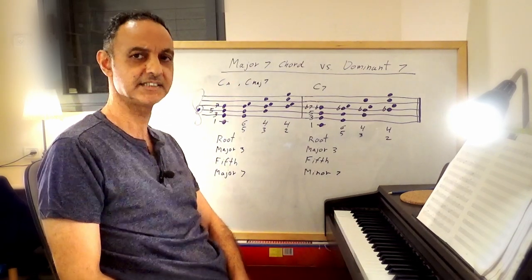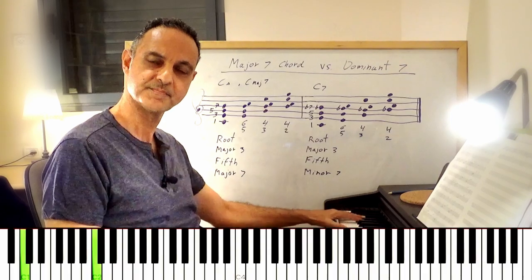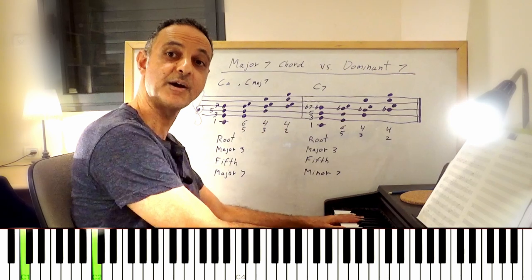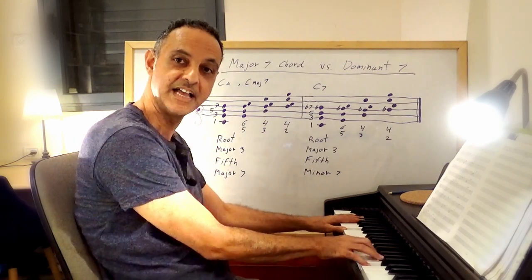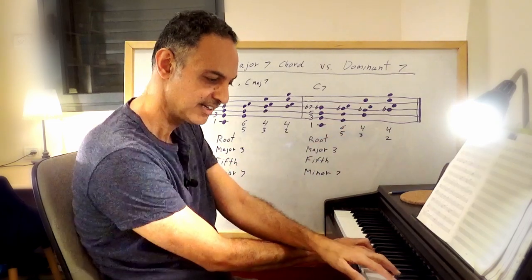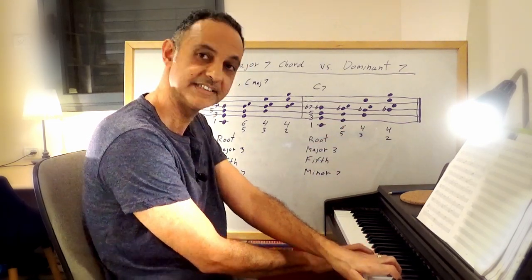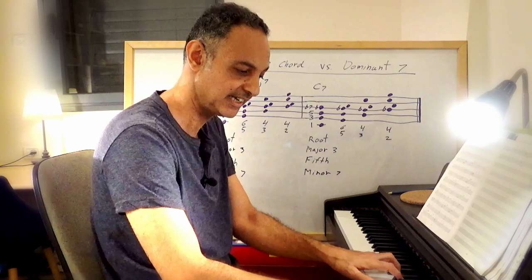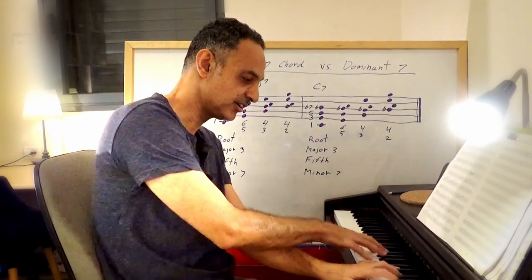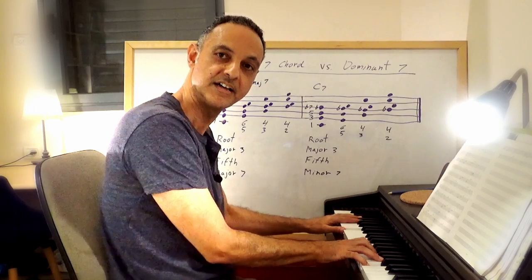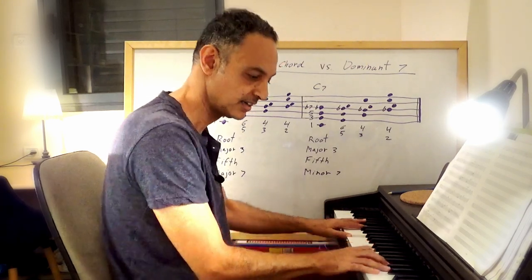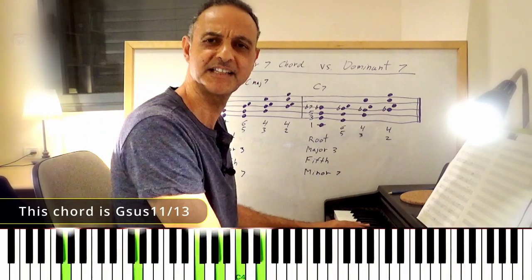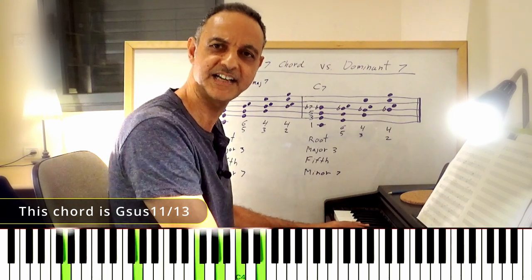Another way to practice is to play the root with your left hand and arpeggiate the root position C major 7 with your right hand. Then the left hand crosses over, you can play the same thing an octave higher, and then the right hand goes up. Then descend: right hand, left hand, right hand over. Go to F major 7 and do the same thing. Sometimes I also like to play F major 7 over G to get a nice suspended sound.